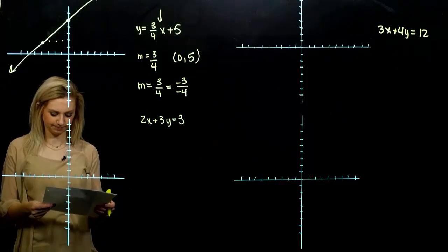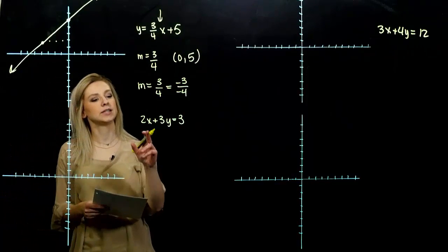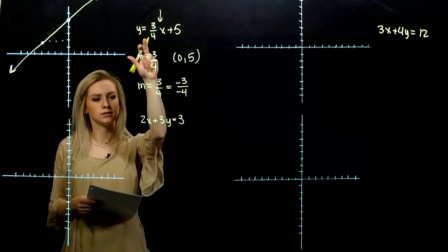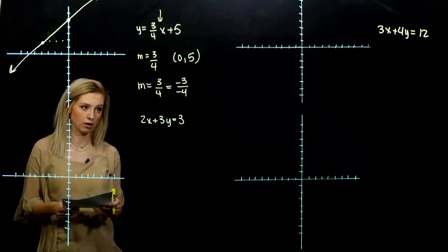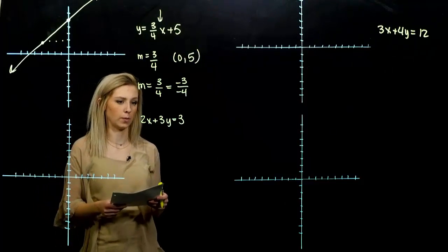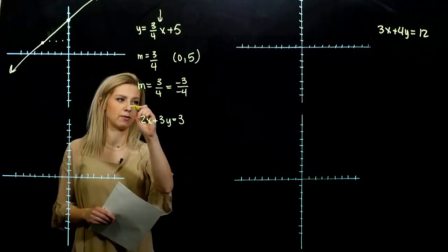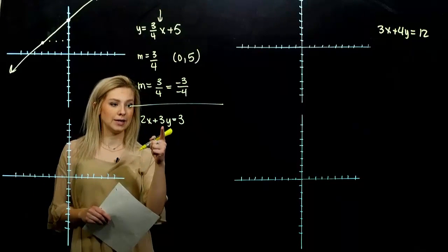And the next one. How is it different than what we've just seen? I can't pluck off the slope and the y-intercept yet, because it's not in the slope-intercept form. So we need to solve for that one first.